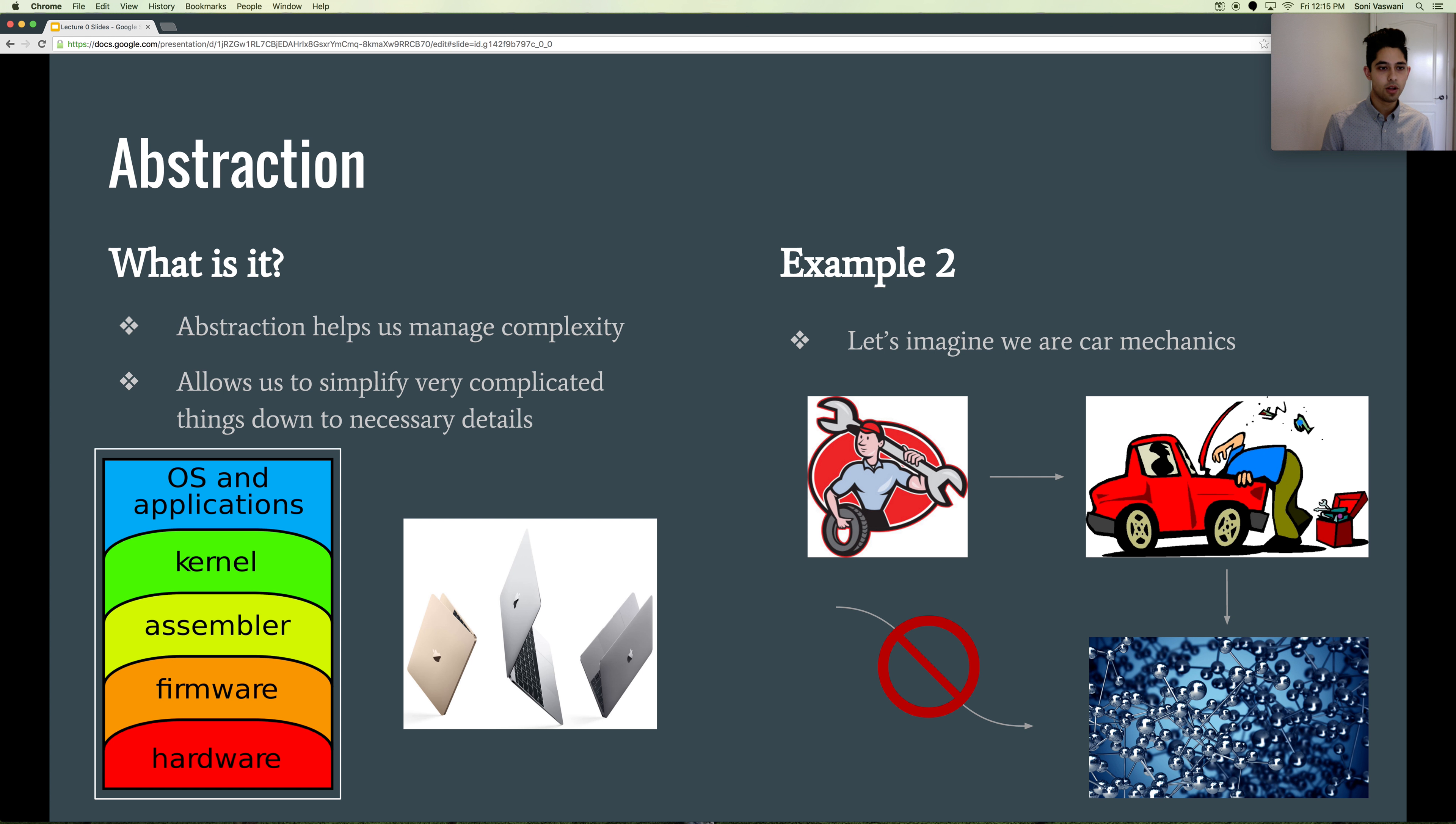With our first example, the unnecessary details were the intimate parts of the computer and all the software within that's controlling what's going on. In this example, we don't need to worry about the molecular details. That's not how we're going to fix the car. We're going to fix the car by focusing on the things that we need to fix. That's what abstraction is.